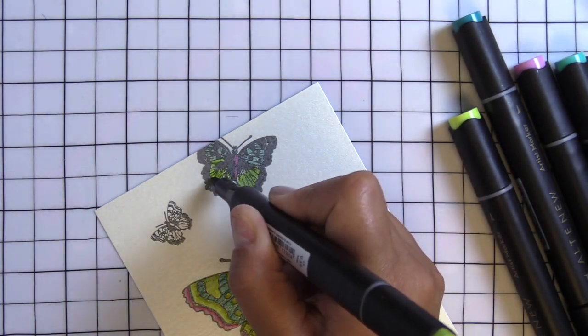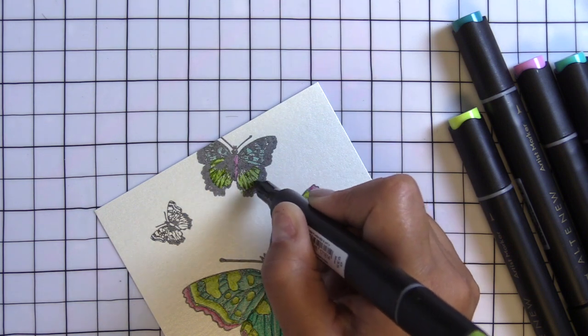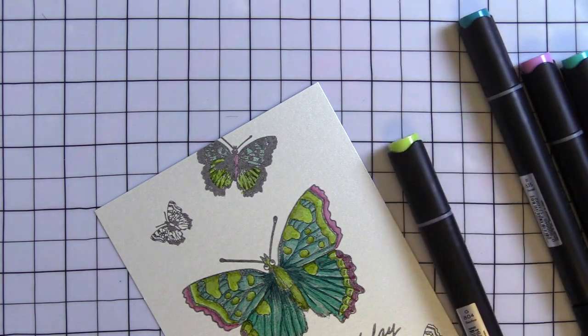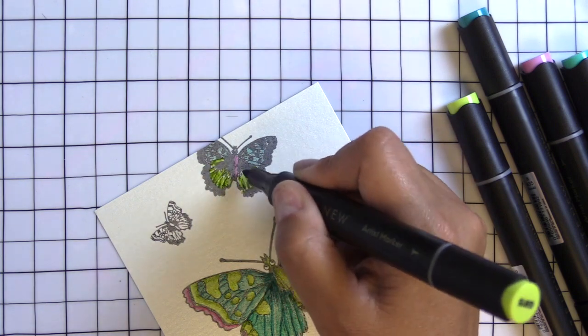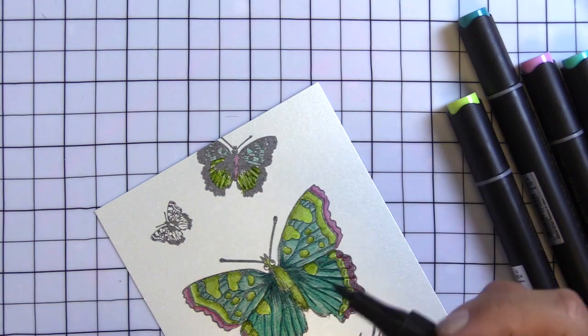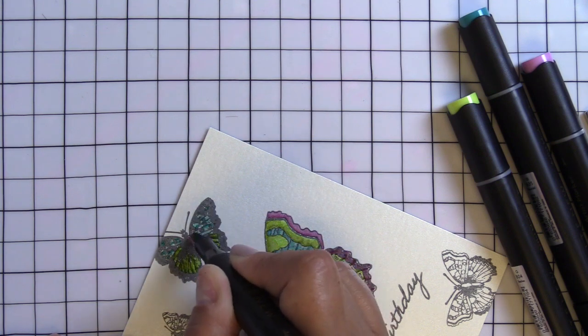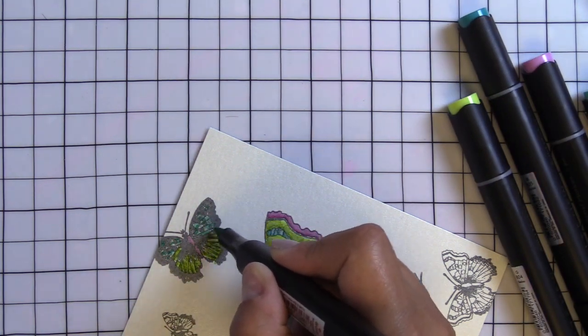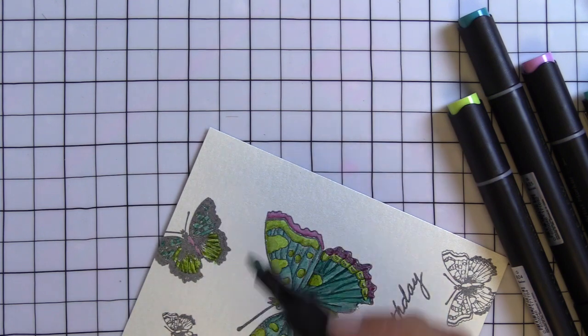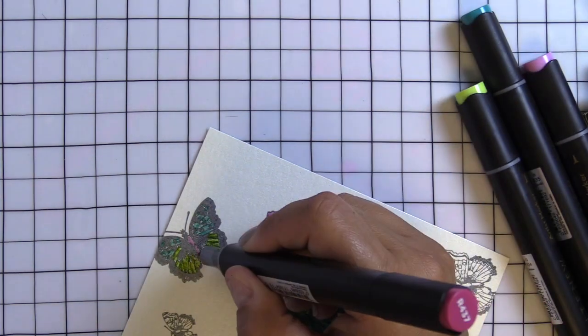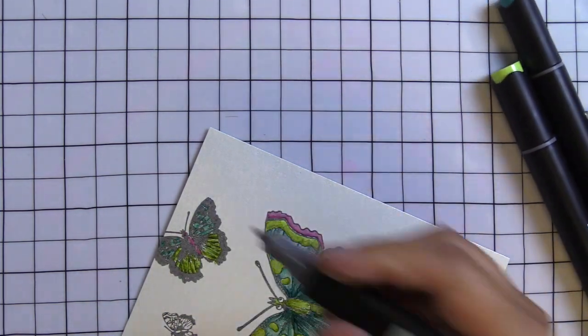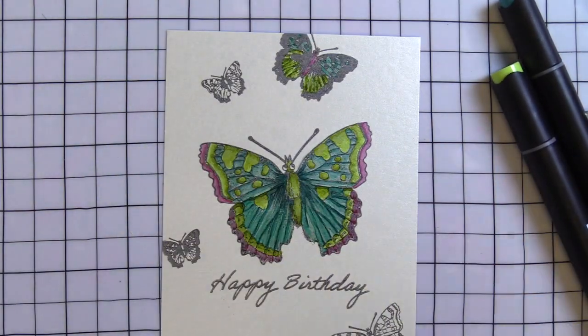So normally I will start with my darkest color. Here I did a base layer of the lightest color which is bamboo - these are Altenew artist markers. And I also came in with moss which is the darkest color in the set just to add some shadows. And then the teal is from the seashore set, so I believe that's set D and the tropical forest markers are from set E. I'll have everything linked below.